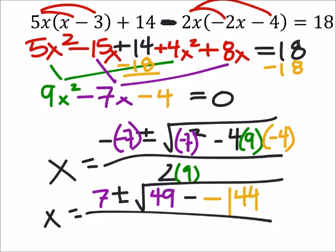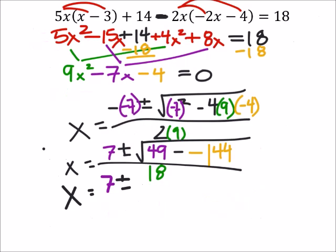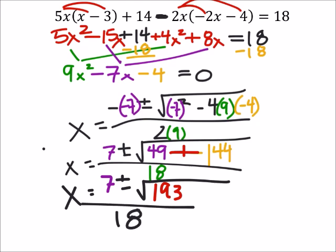And all over 2 times 9 is 18. So x equals 7 plus or minus, and yes we're going to have to add those two together, so 49 plus 144 is 193, all over 18.